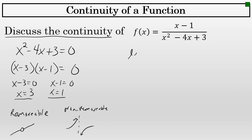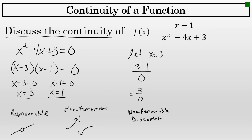To test for this, let x = 3 and substitute into the original function. When x = 3, the numerator is 3 - 1, and the denominator is 0, giving 2/0. Anytime you have a non-zero number over 0, this implies that at that x value there is a non-removable discontinuity. For this function, there is a non-removable discontinuity at x = 3.